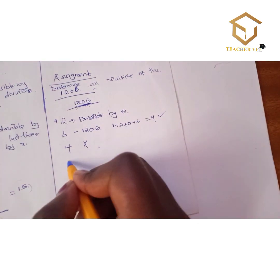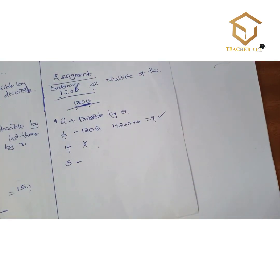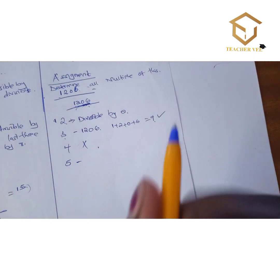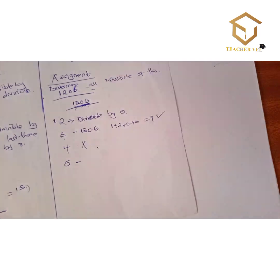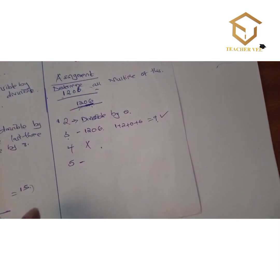Divisibility test of 5: a number is divisible by 5 if the last digit is 0 or 5. Since our last digit is 6, this number is not divisible by 5.